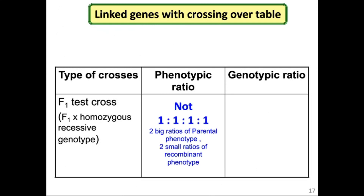For linked genes with crossing over, when we perform a test cross on the F1 generation — crossing with a homozygous recessive — the phenotypic ratio will not be 1:1:1:1 as in a Mendelian di-hybrid cross. However, the genotypic ratio will remain as 1:1:1:1.